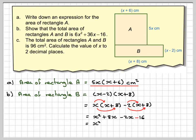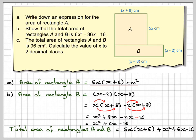So we're going to have x², 8x - 2x gives me 6x, and then we've still got that -16. Now, the total area of rectangles A and B is going to be 5x(x + 6) + x² + 6x - 16.